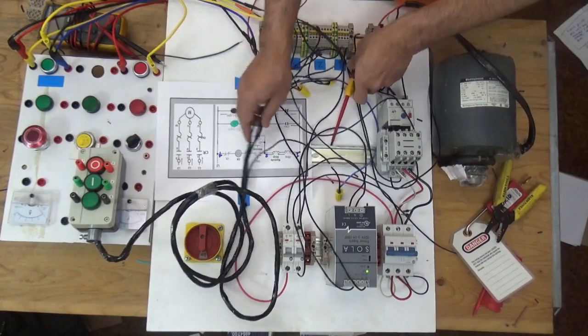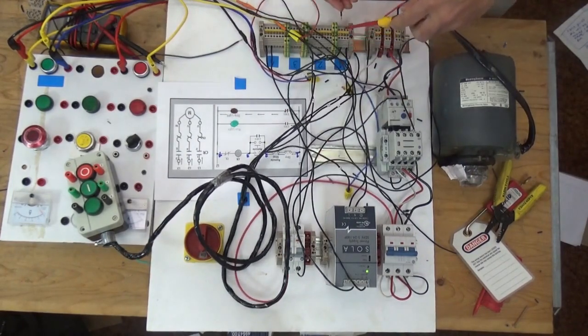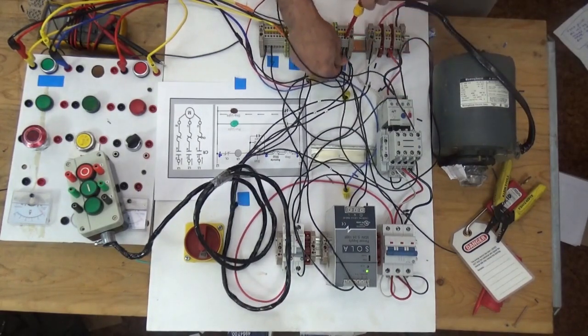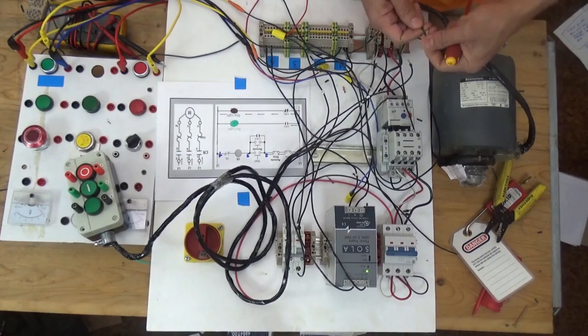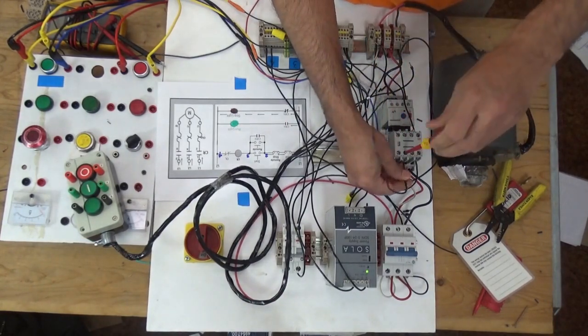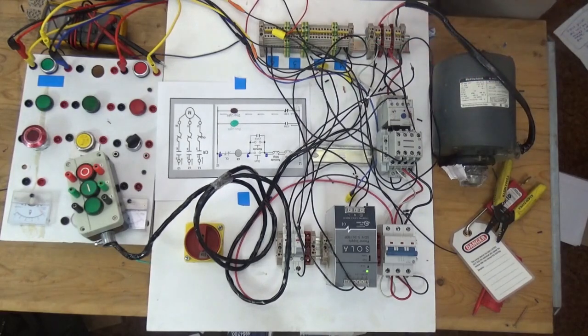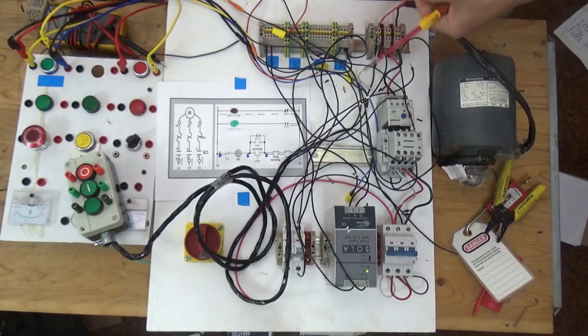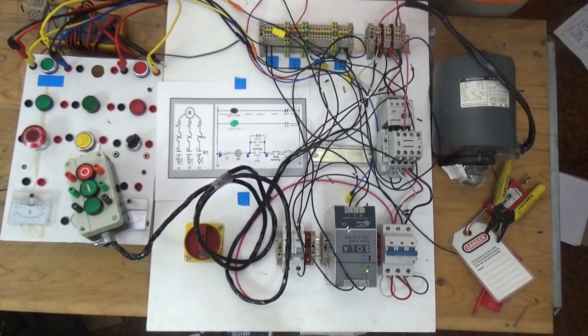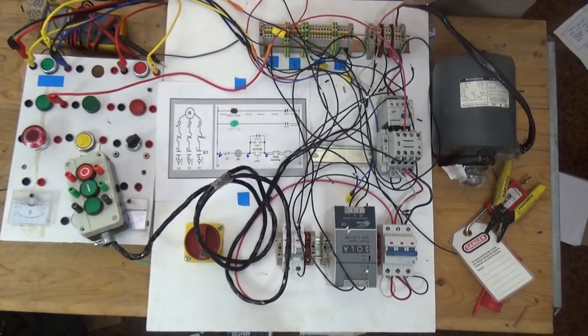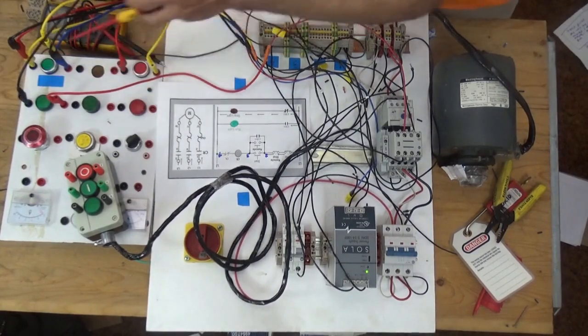So that is multiple start-stop. Now the next one is we're going to connect the indication light from line one going to our normally open. From normally open going to our lights, start. And from lights going to line four here.